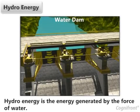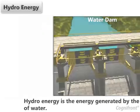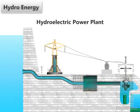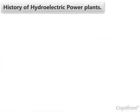Hydro energy is the energy generated by the force of water. This is a powerful way of generating electricity. The hydro energy is converted into electric energy by a hydroelectric power plant, and this energy is called hydroelectricity.